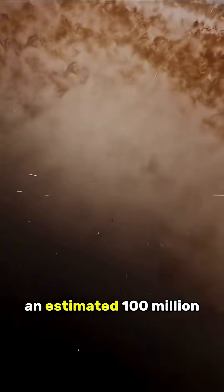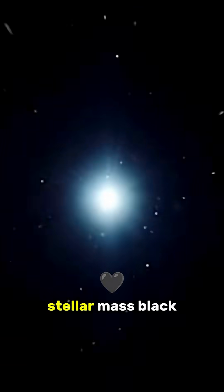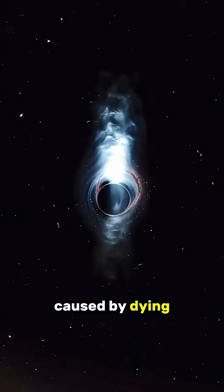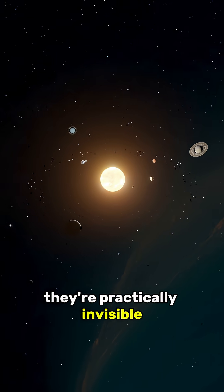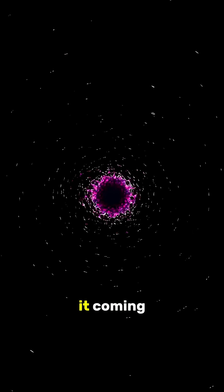In fact, most galaxies have an estimated 100 million stellar mass black holes caused by dying stars. And while it's unlikely that one of them could come crashing through our solar system, they're practically invisible to us, so we would never actually see it coming.